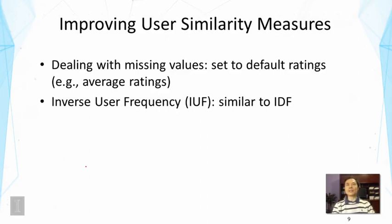Another idea, very similar to IDF in text search, is called Inverse User Frequency (IUF). The idea is that if two users share similar ratings on a popular item viewed by many people, that says less about their similarity. But if it's a rare item that few users have viewed, and these two users both viewed it and gave similar ratings, that says more about their similarity. IUF emphasizes similarity on items not viewed by many users.